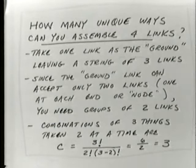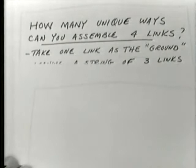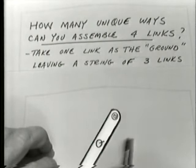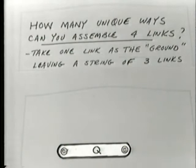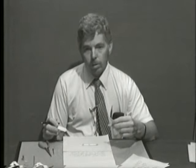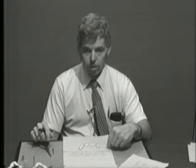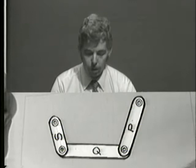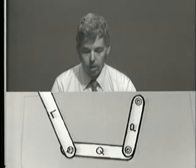The next question is: how many unique ways can we assemble these links? If I take one link as the ground — say the Q link — and want to attach the remaining three links, since each is a binary link connected by full joints, I can only put two links adjacent to the ground link. So I could attach S and P to Q, or alternatively L and P.